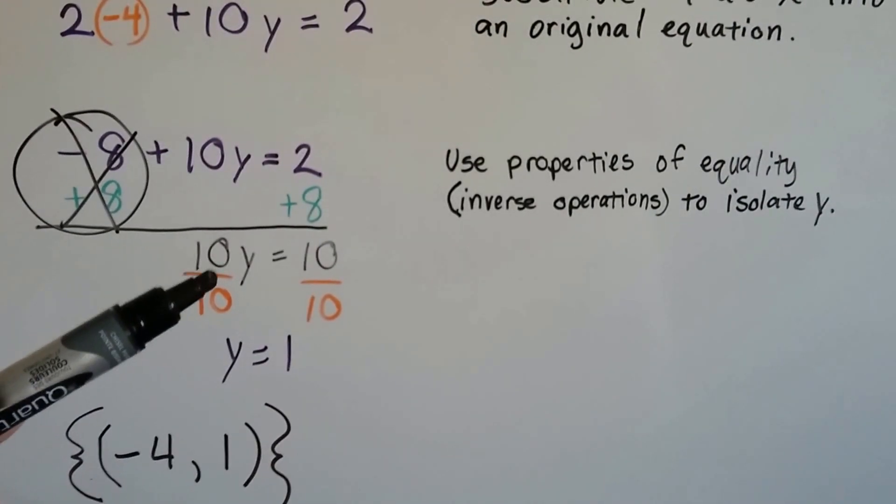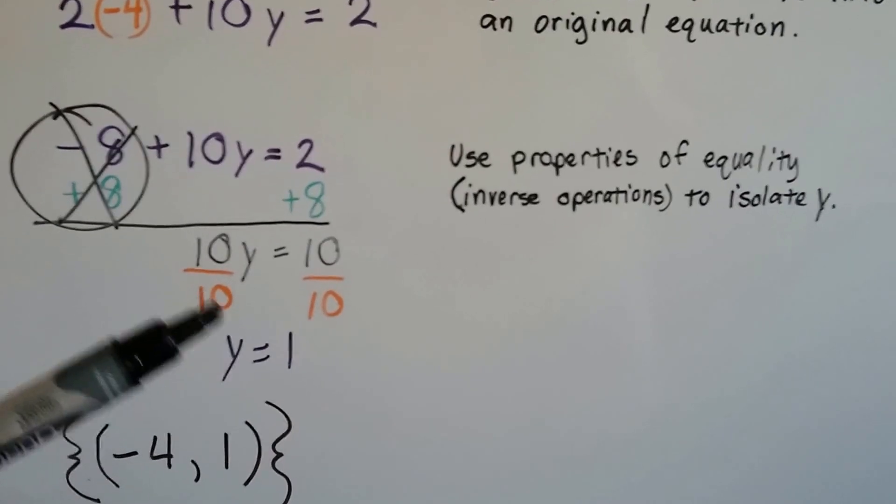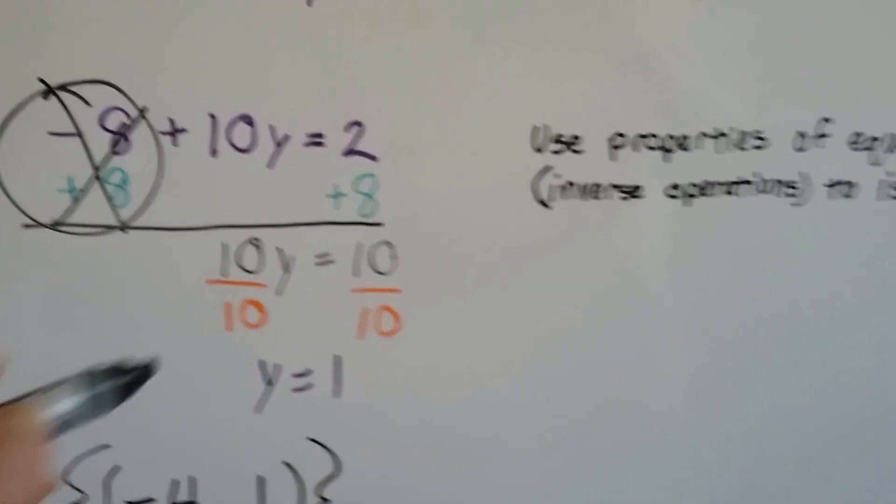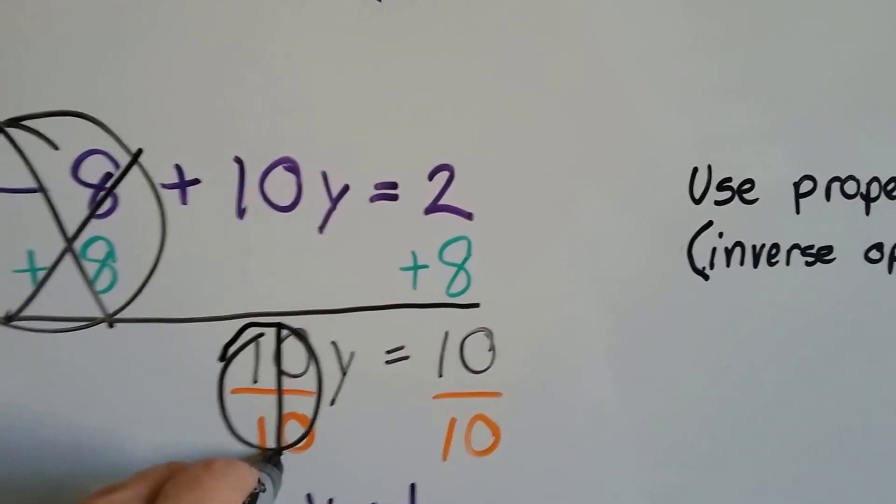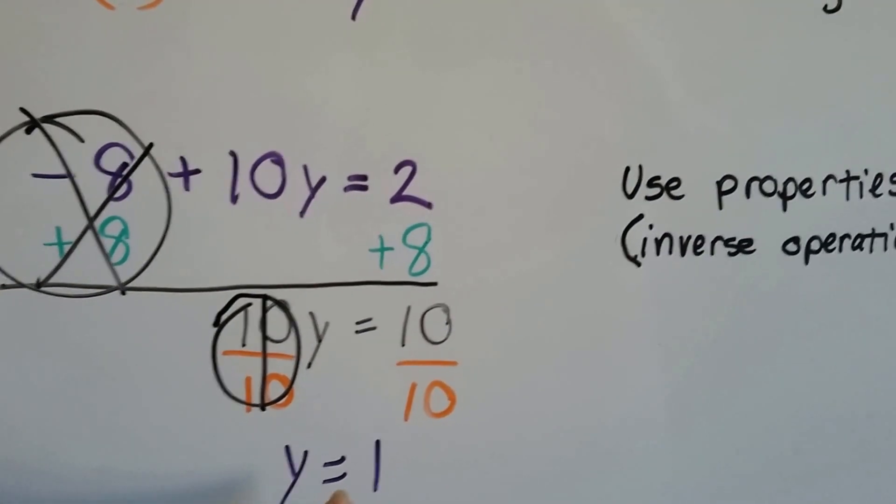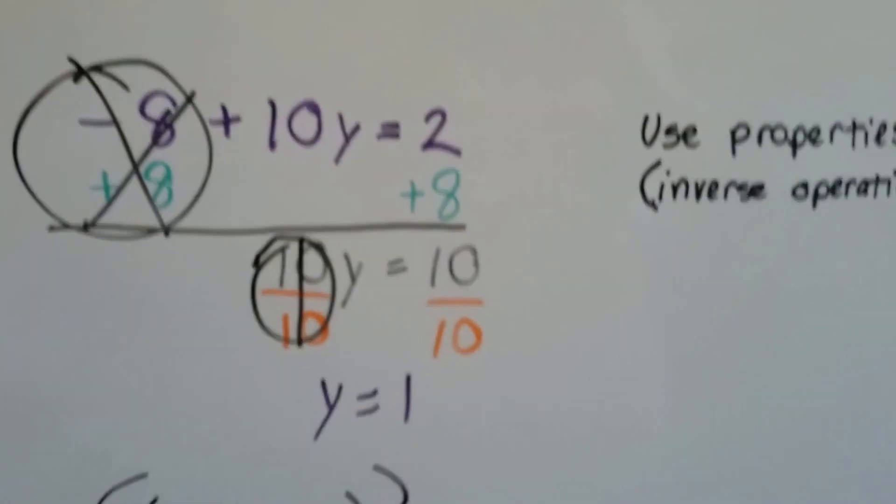That's using the properties of equality, those inverse operations, to isolate the y. We make our friend the invisible 1 again. So we have 1y equals 1 because 10 over 10 equals 1. Our solution set is negative 4, 1.